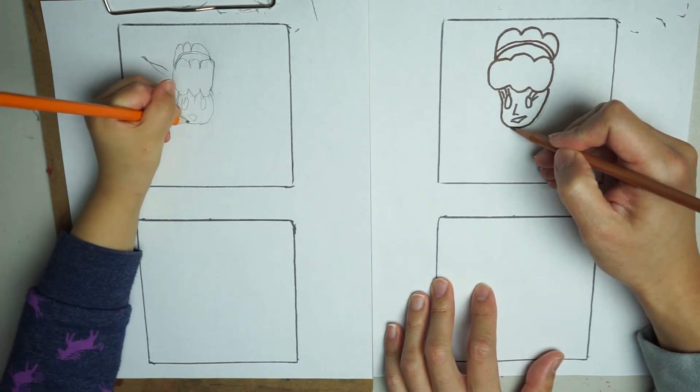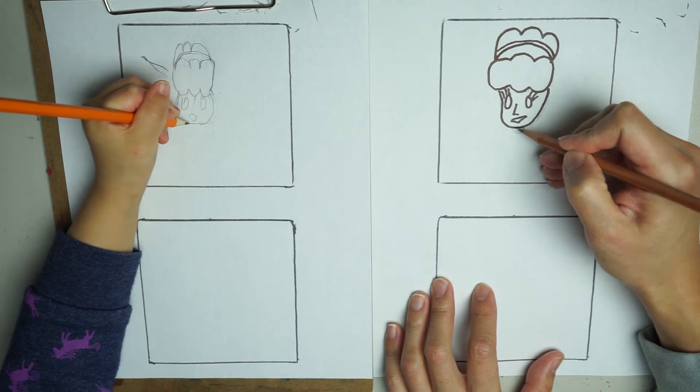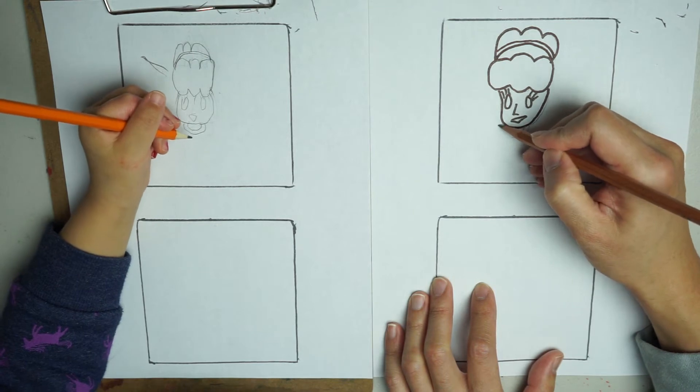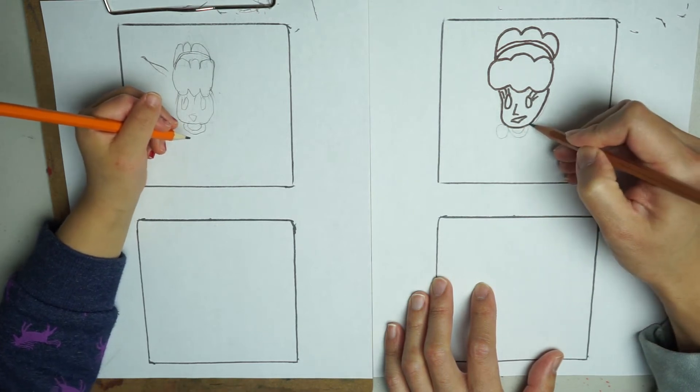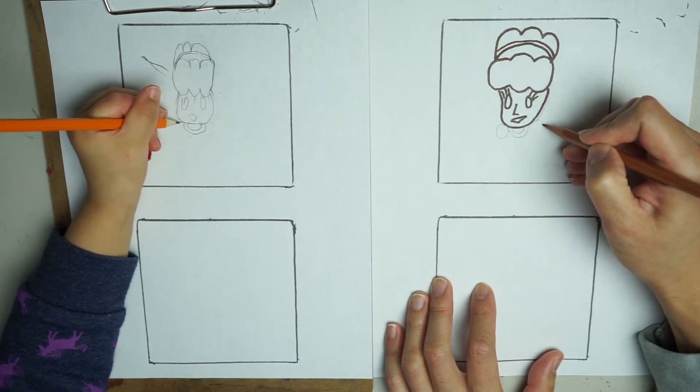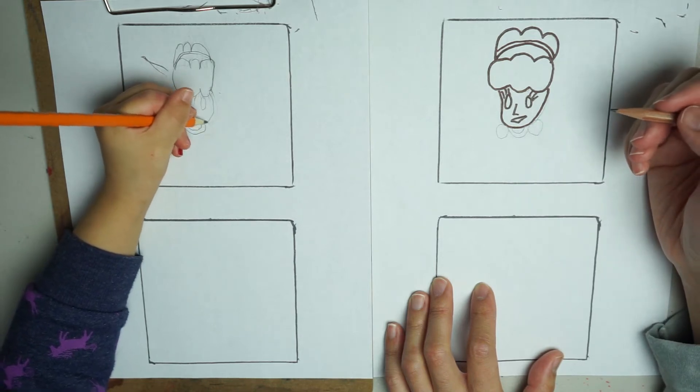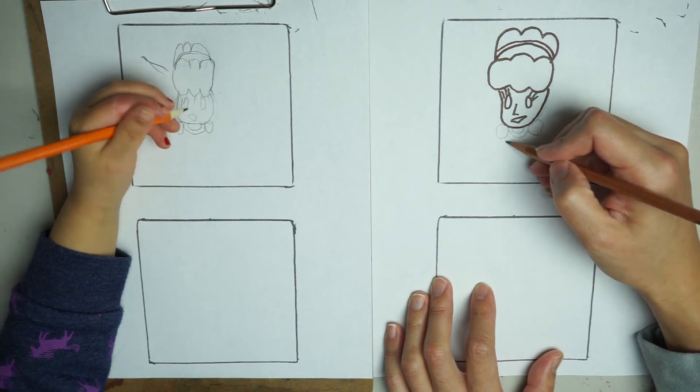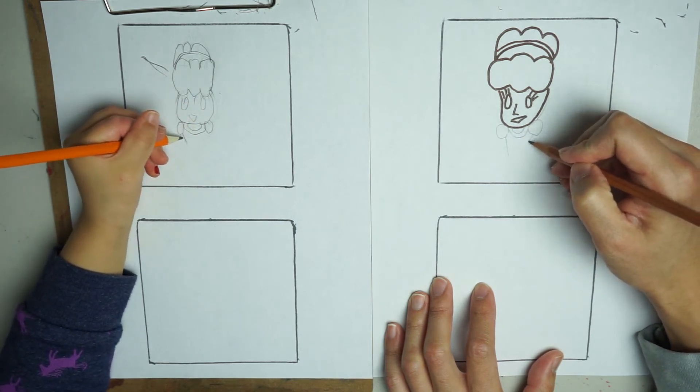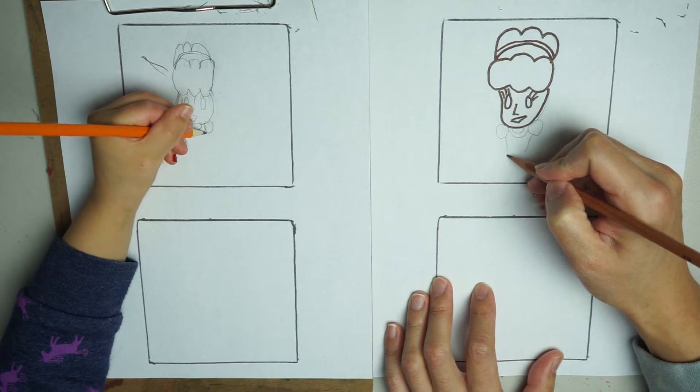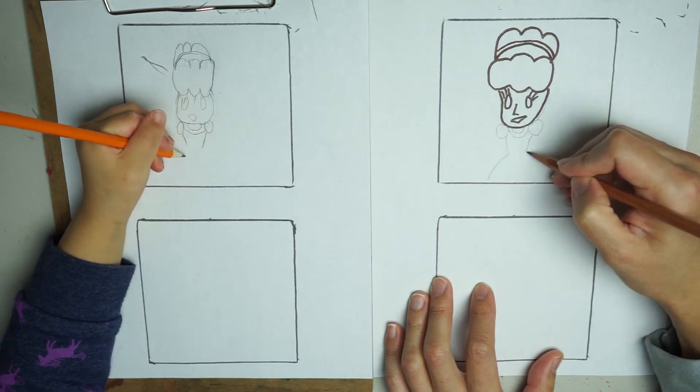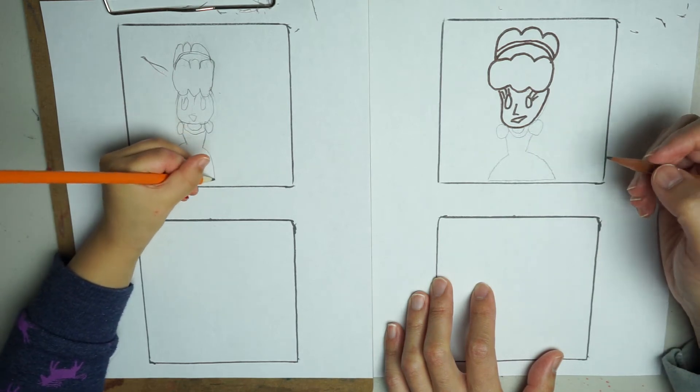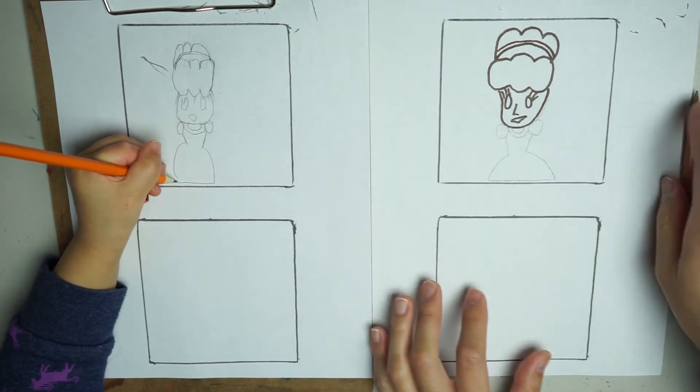She's got a necklace here. It's a choker. It's a black choker. Two circles. One on the other side. Okay, you make yours. Okay. And then we're going to have the dress here.